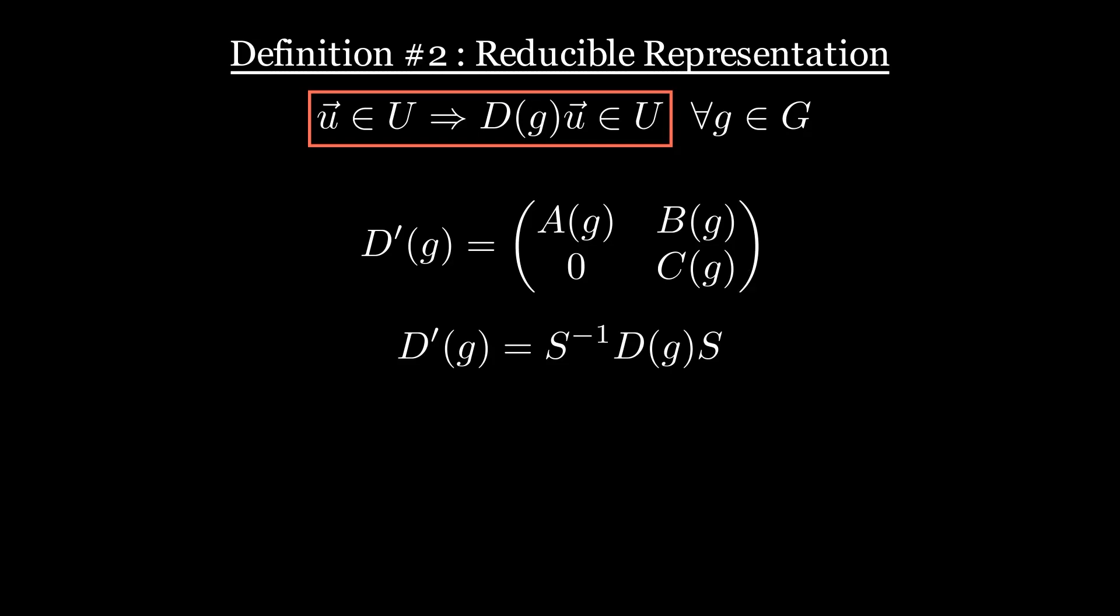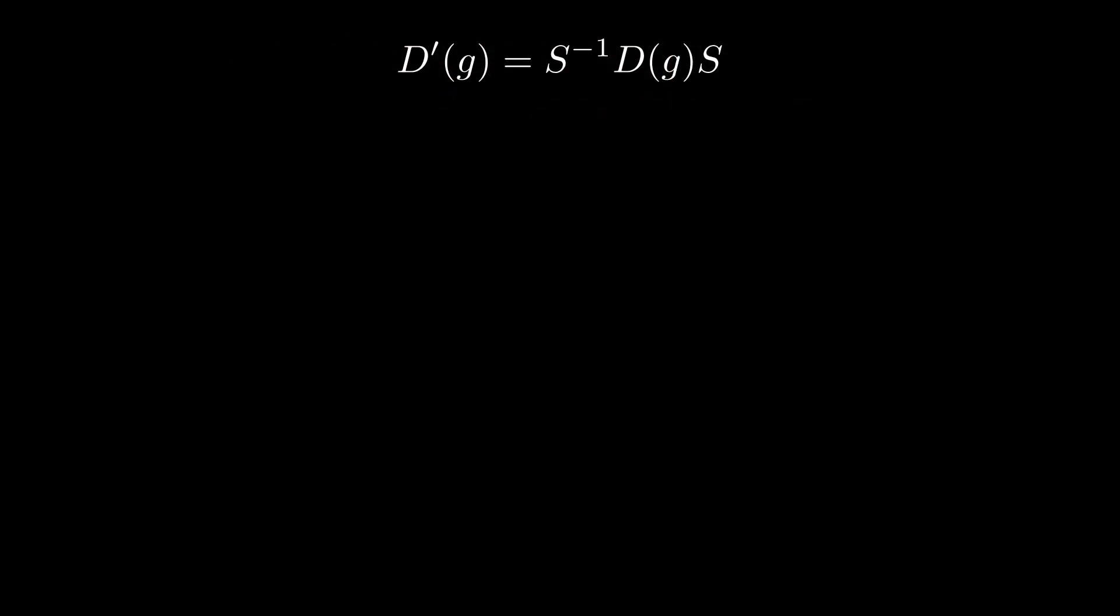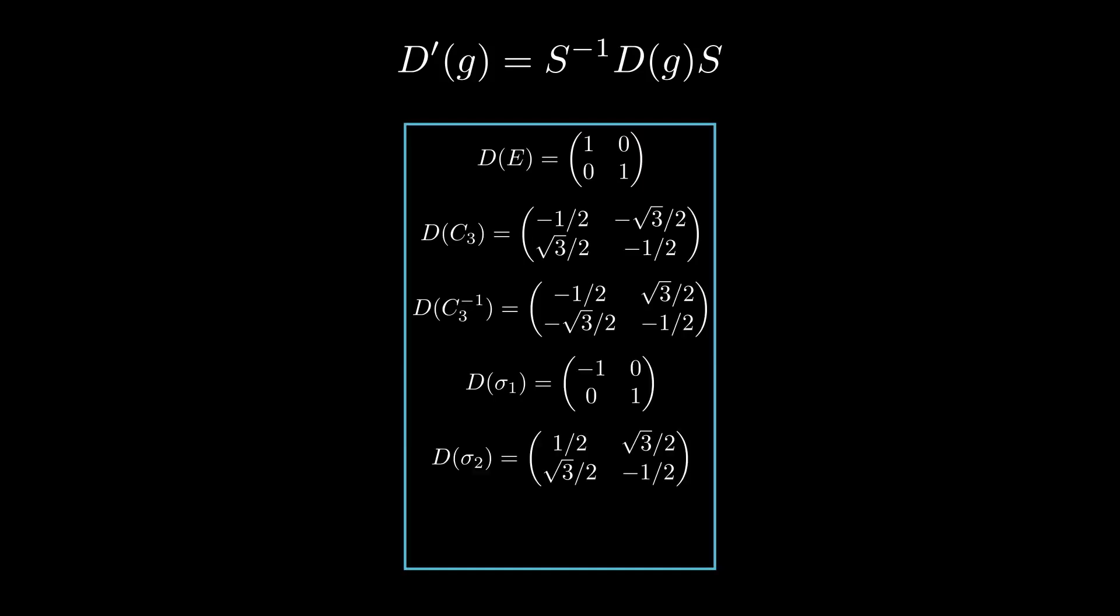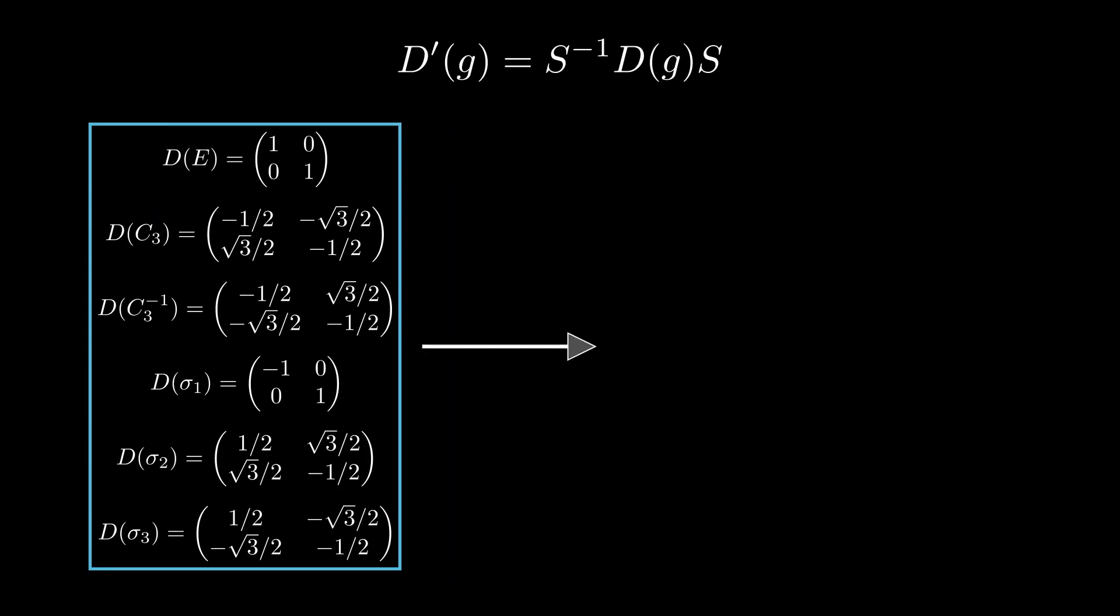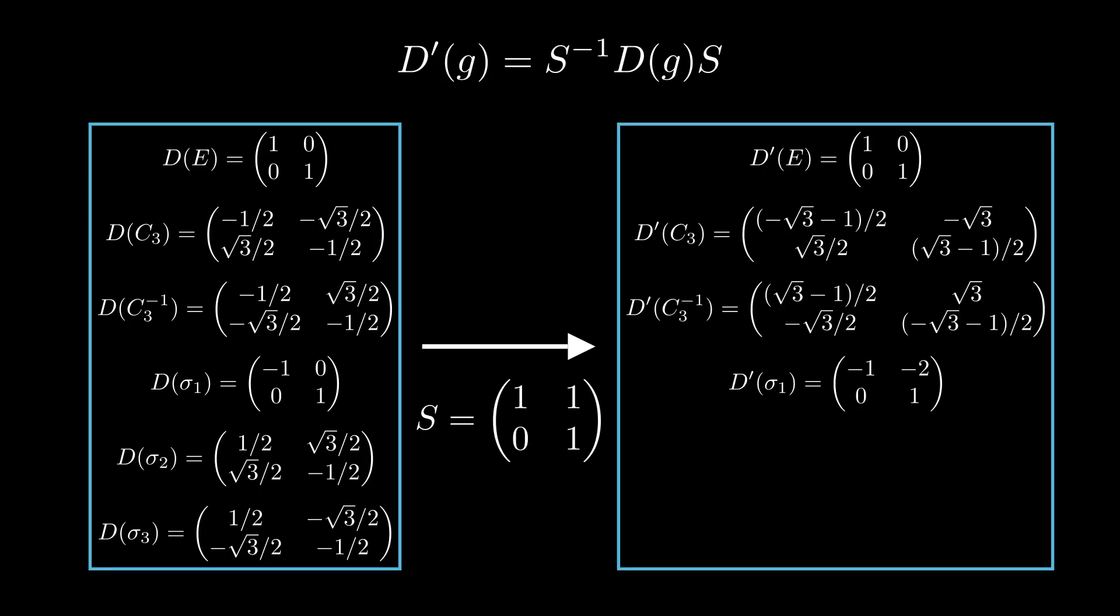I think it may be useful to illustrate this change of basis on an example. So, let's come back to our C3V group, and take this 2D representation I gave you before. If for example, in our change of basis, we keep the first vector unchanged, and replace the second vector by the sum of the two vectors, we apply a transformation with this matrix S, giving us new matrices d'. Notice that these matrices are still not in the reducible form. In fact, there is no invariant subspace in this case.